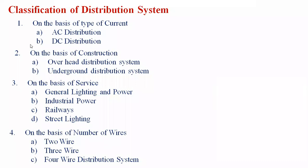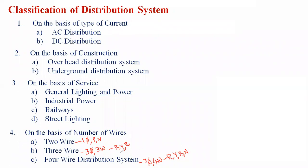On the basis of number of wires, the distribution system is classified into three methods: two-wire system, three-wire system, and four-wire system. The single-phase two-wire system has one phase and one neutral. The three-phase three-wire system represents R-phase, Y-phase, and B-phase. The three-phase four-wire system has R, Y, B, and neutral. For industrial applications, the three-phase three-wire system is used; for domestic, agricultural, and irrigation purposes, the three-phase four-wire system is used.